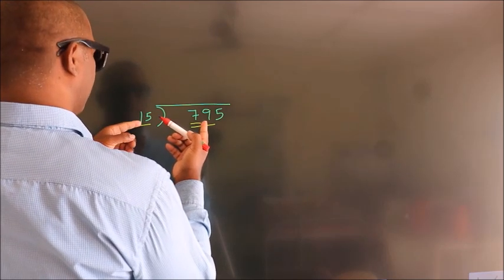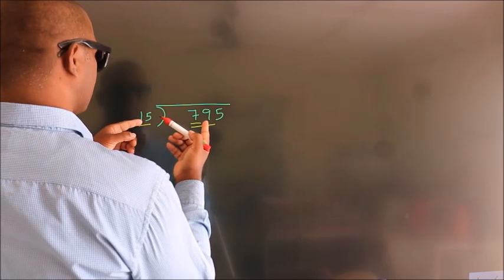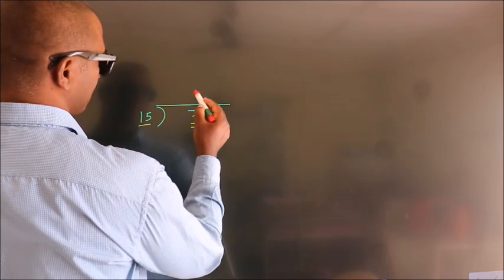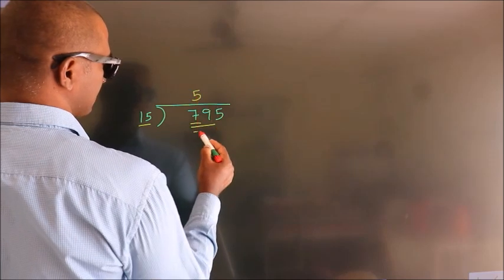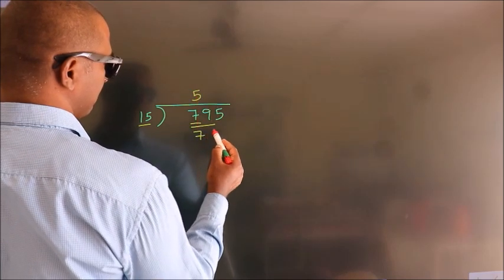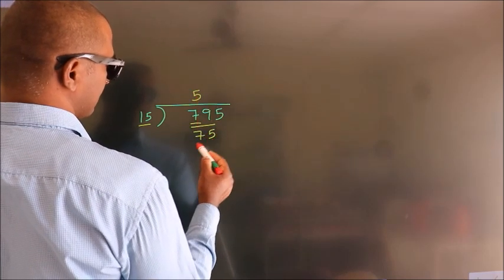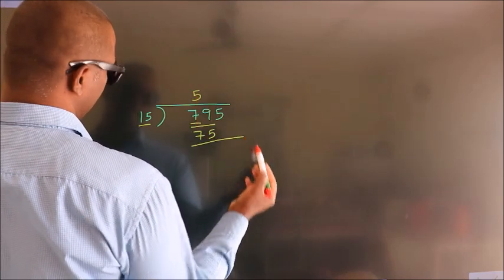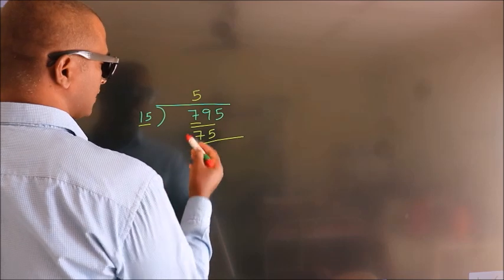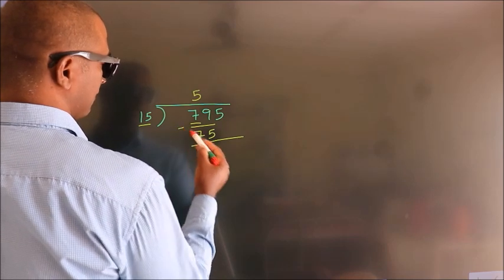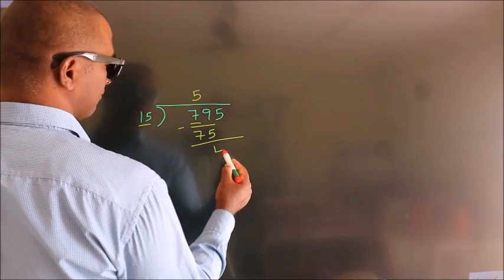In the 15 table, 15 fives is 75. Now we should subtract. We get 4.